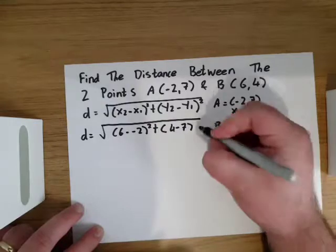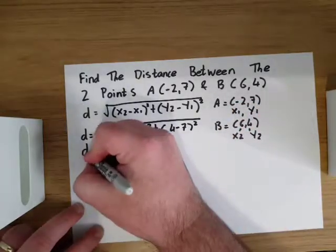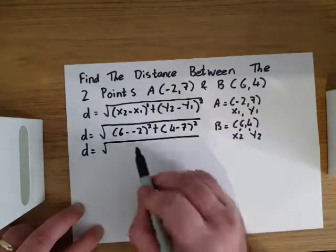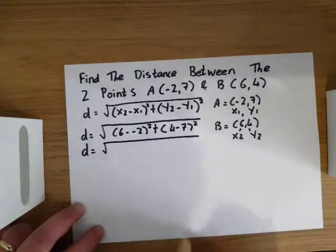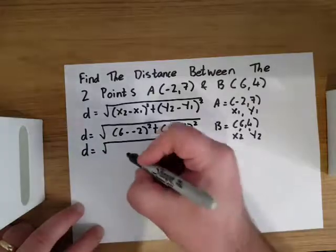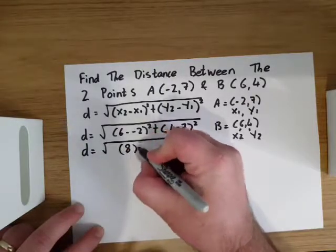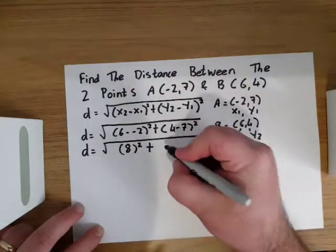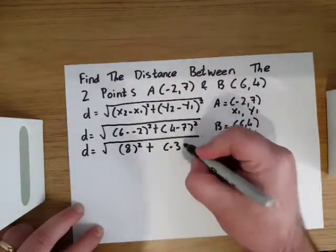So we have the distance equals the square root of 6 minus -2. Remember, two minuses become a plus. So 6 plus 2 gives us 8 squared, plus 4 minus 7, which is -3, again squared.